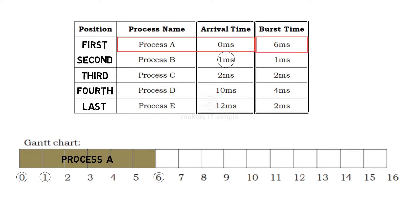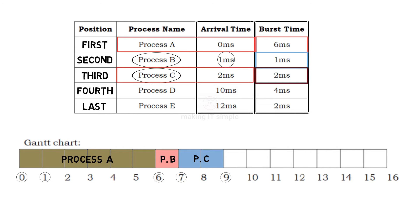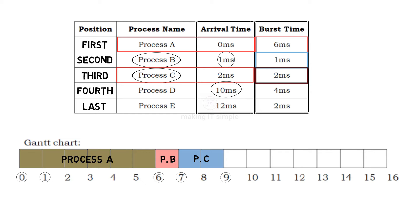At 6ms, after process A completes, which processes have arrived? Both B and C, but process B came before C, so it executes first. Process B runs for 1 millisecond and finishes. Now at 7ms, only process C is in the queue, so it executes for 2 milliseconds. At 9ms, no process is left — process D arrives at 10ms — so the CPU remains idle from 9ms to 10ms.